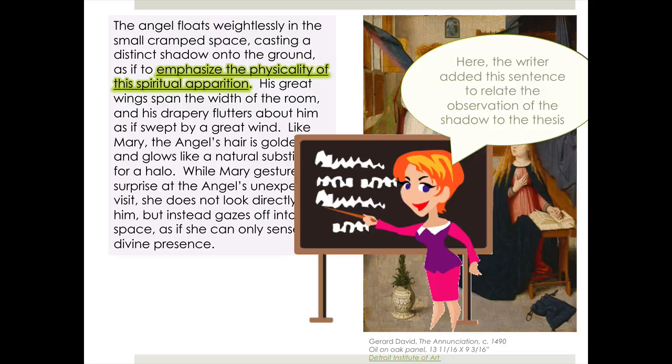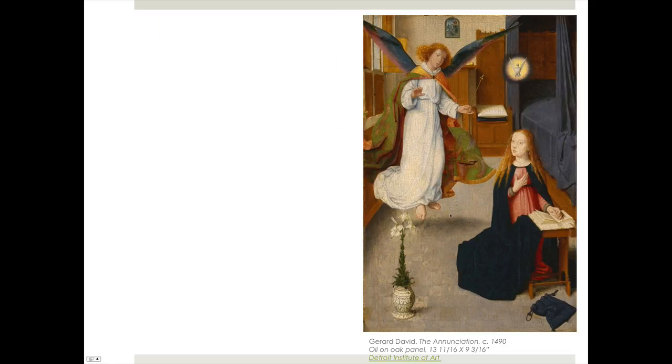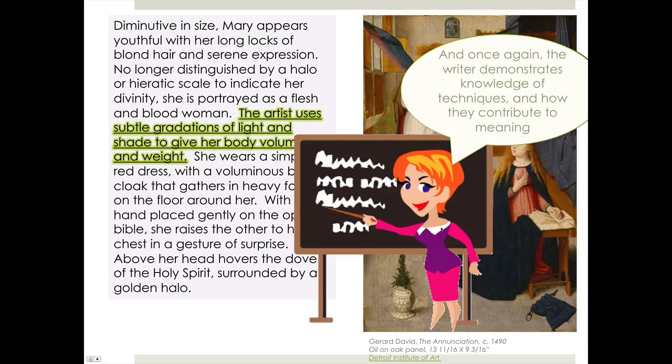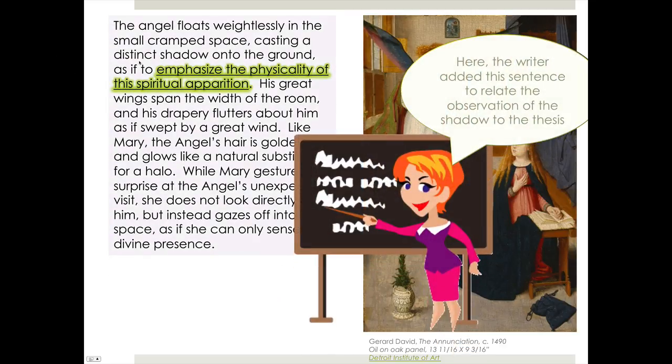Remember the description of the angel — I actually borrowed that from a student who wrote an essay on this — and notice that wonderful detail of the shadow cast by the angel. But that needs to be placed in context. So: the angel floats weightlessly in the space, casting a distinct shadow onto the ground, as if to emphasize the physicality of this spiritual apparition. That added sentence relates this observation back to the thesis that Gerard David is taking the flat abstract icons of medieval art and making them physical and real — so the angel is now casting a shadow.